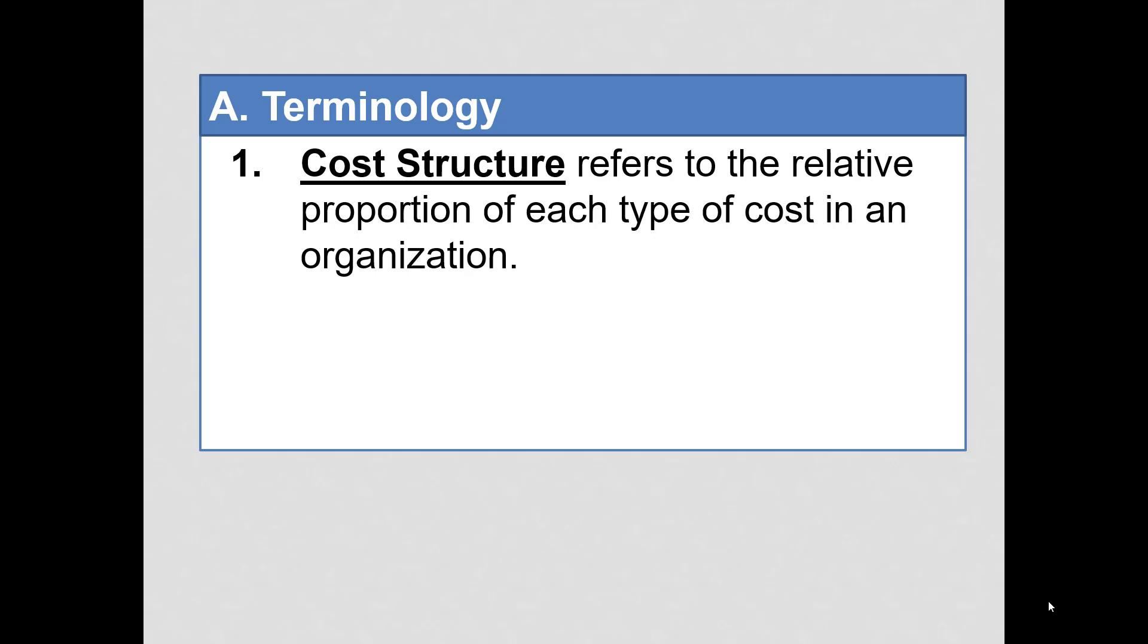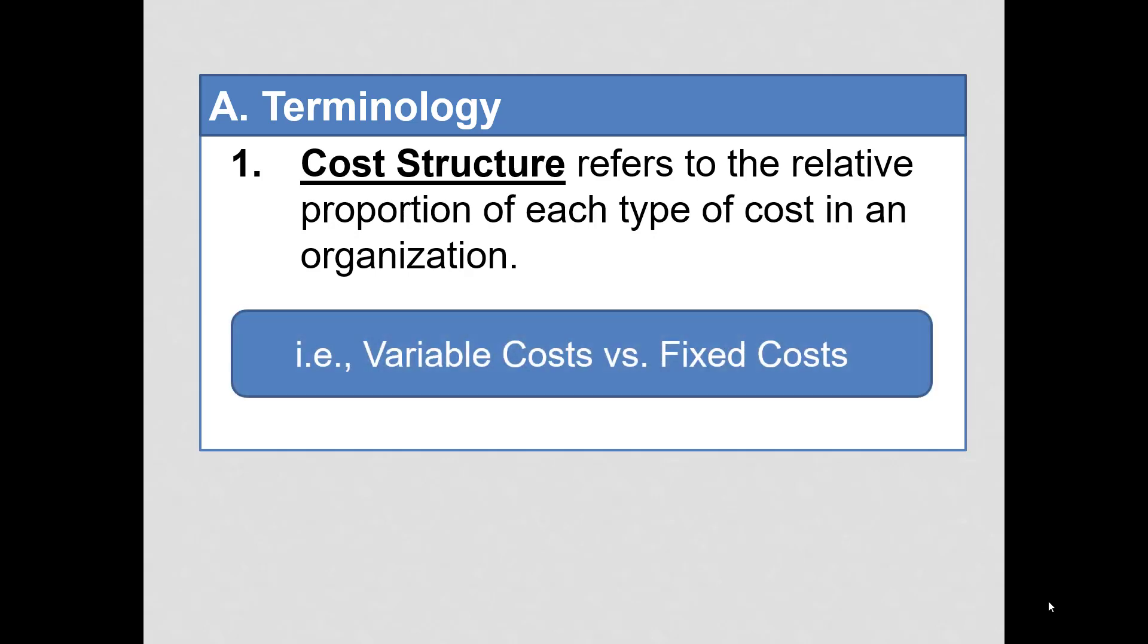We'll first need to discuss just a few terms. Cost structure refers to the relative proportion of each type of cost in an organization. Generally speaking, this means that we are looking at variable costs versus fixed costs. Now you've probably heard of those terms before. We'll discuss them in just a few minutes.